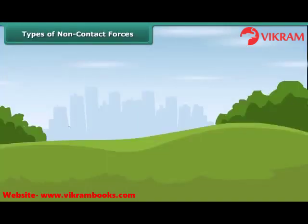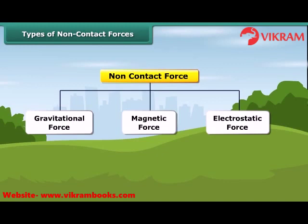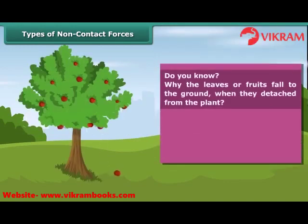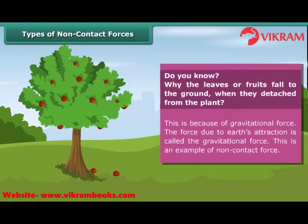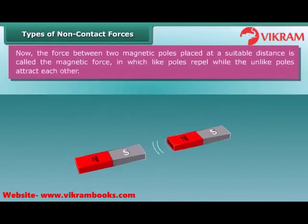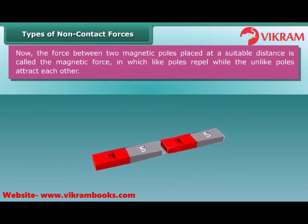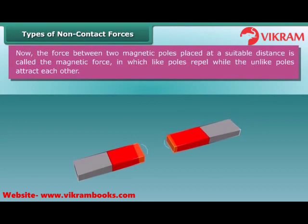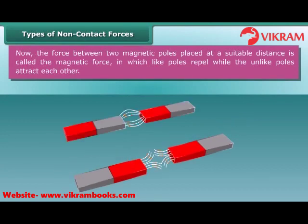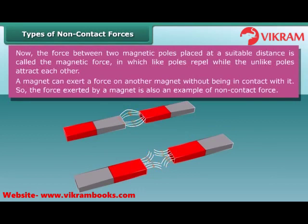Types of non-contact forces. The types of non-contact forces are: gravitational force, magnetic force, and electrostatic force. Why do the leaves and fruits fall to the ground when they detach from the plant? This is because of gravitational force — the force due to Earth's attraction, which is an example of non-contact force. The force between two magnetic poles placed at a suitable distance is called magnetic force, in which like poles repel while unlike poles attract each other. A magnet can exert a force on another magnet without being in contact with it, so the force exerted by a magnet is also an example of non-contact force.